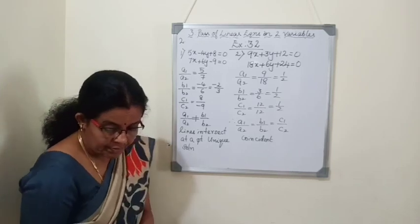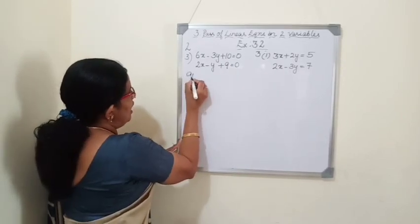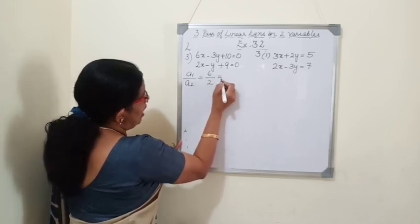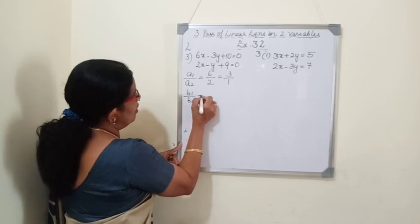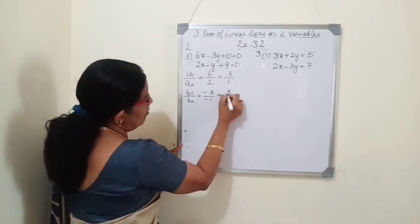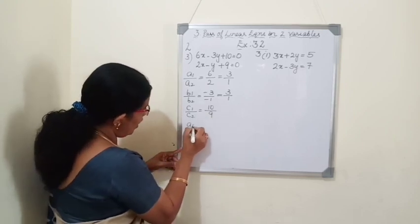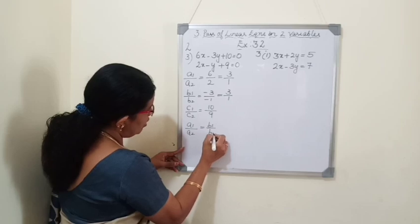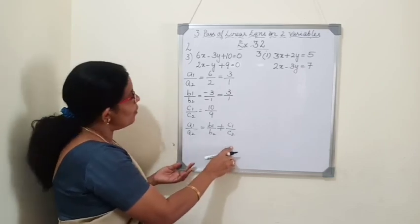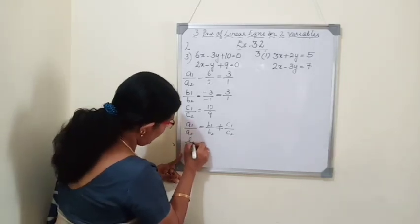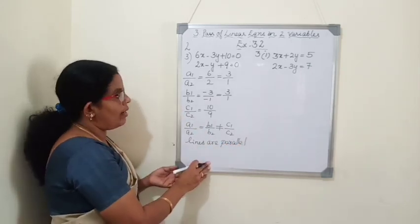Third question: 6x minus 3y plus 10 equals 0 and 2x minus y plus 9 equals 0. a1 by a2 equals 6 by 2 equals 3 by 1. b1 by b2 equals minus 3 by minus 1 equals 3 by 1. c1 by c2 equals 10 by 9. So a1 by a2 equals b1 by b2 but not equal to c1 by c2 — the lines are parallel, no solution, and it is inconsistent.